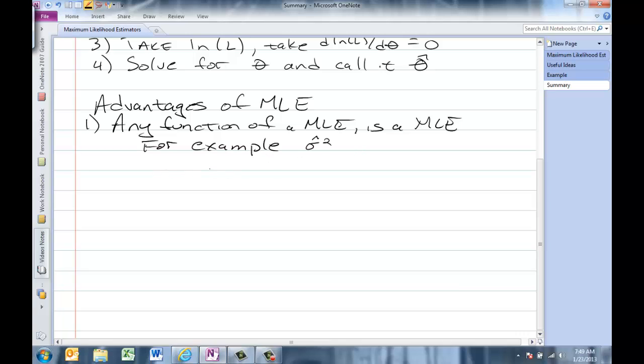This is our maximum likelihood estimator. If we wanted a maximum likelihood estimator of just the standard deviation, we could take the square root of our maximum likelihood estimator from the variance. This will also be a maximum likelihood estimator.